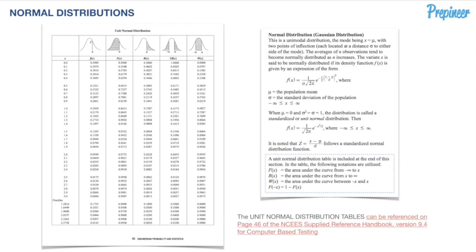We hop to page 46 of our NCES reference handbook to look at our unit normal distribution tables. The table notes that when mu is zero and sigma equals one, the distribution is called a standardized or unit normal distribution. This table is specifically developed for situations where we have a mean of zero and a standard deviation of one.